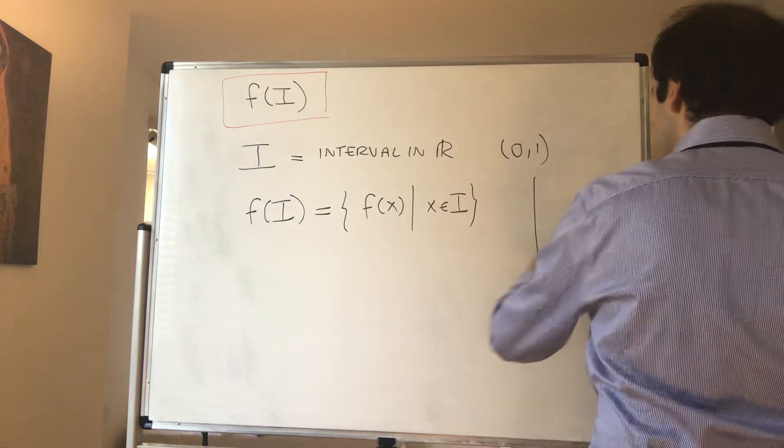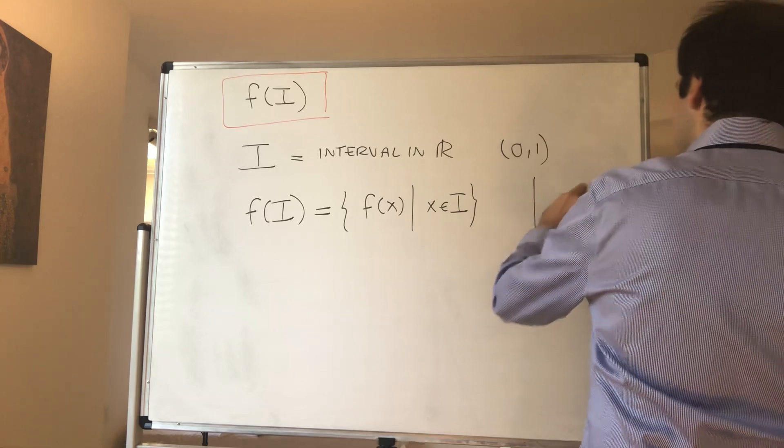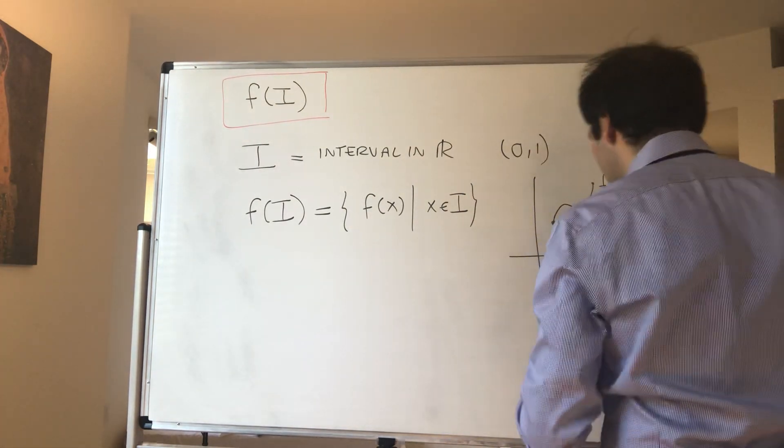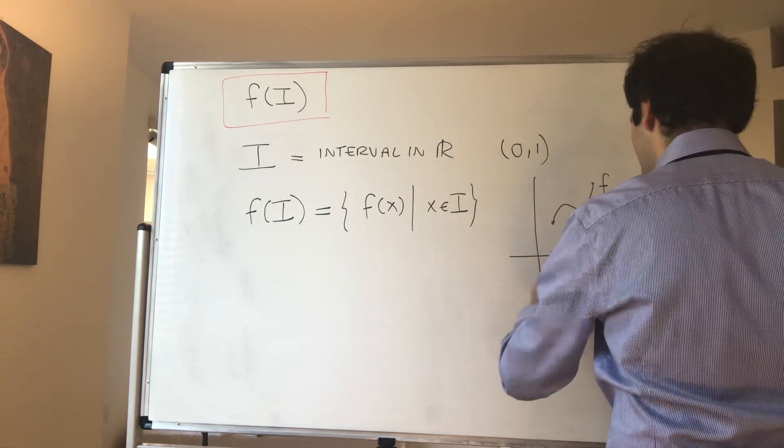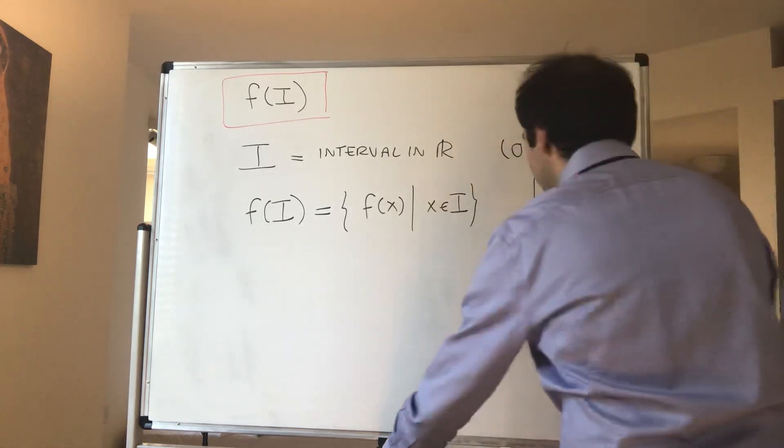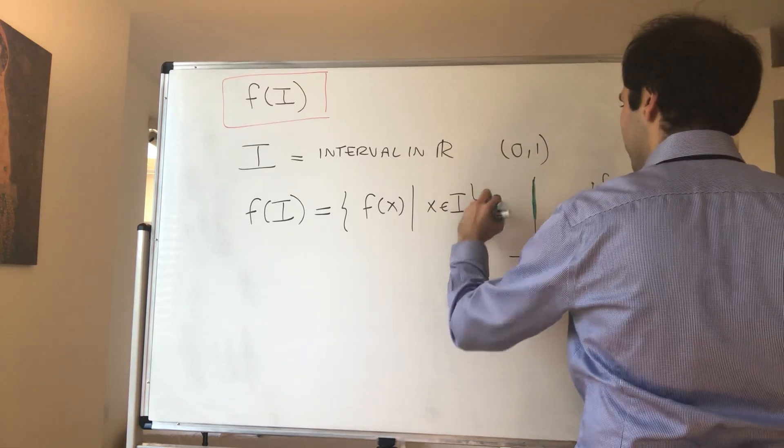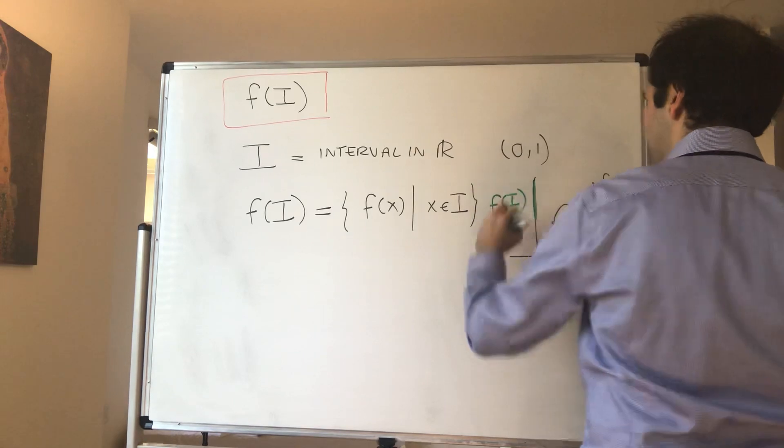In other words, if you have an interval, a function here, for instance f and an interval I, then f of I is just the image of I under the function f. So this is f of I.